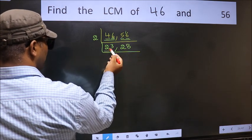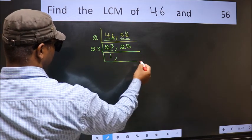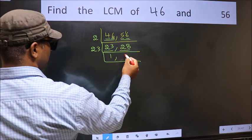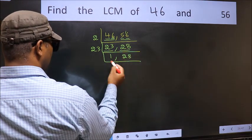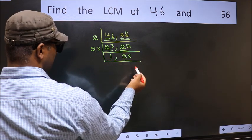Now here we have 23. 23 is a prime number. The other number 28, not divisible by 23, so we write it down as it is. Now we got 1 here, so focus on the next number, 28.